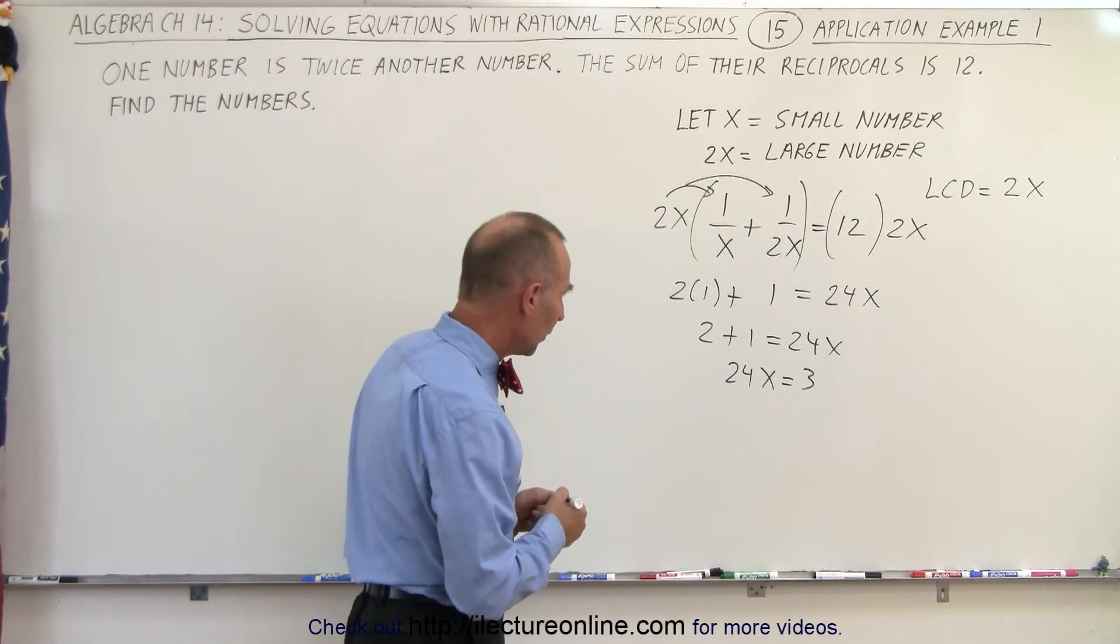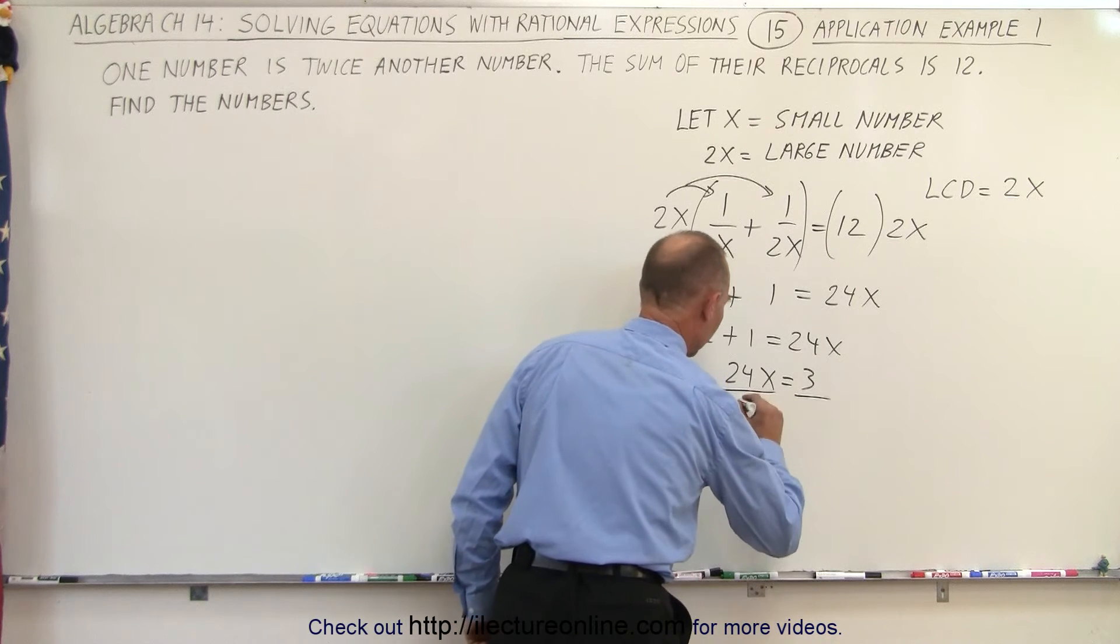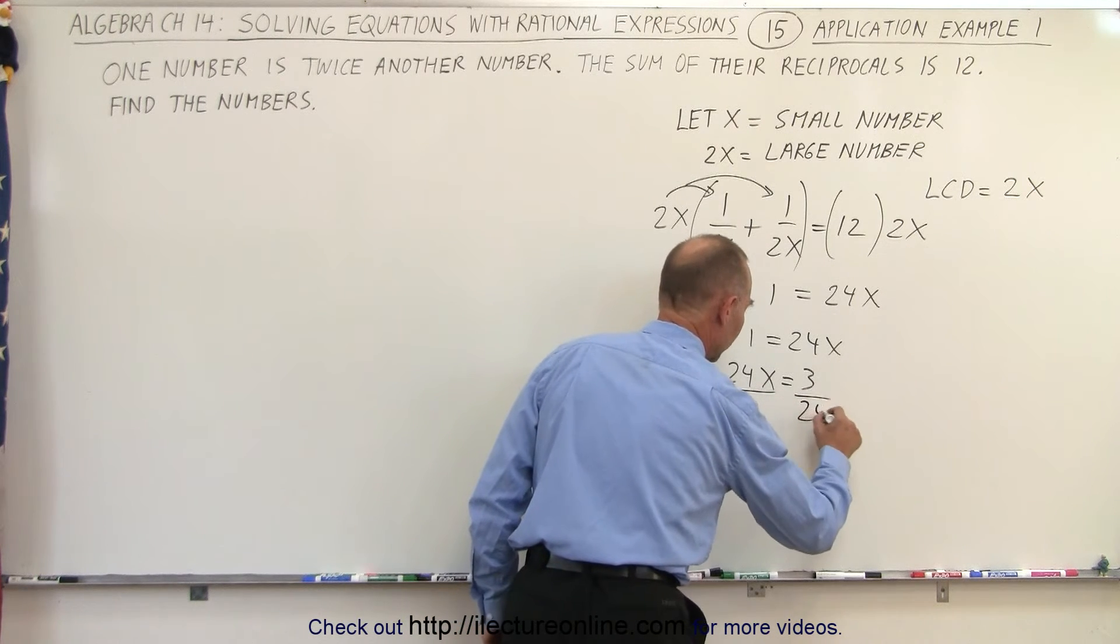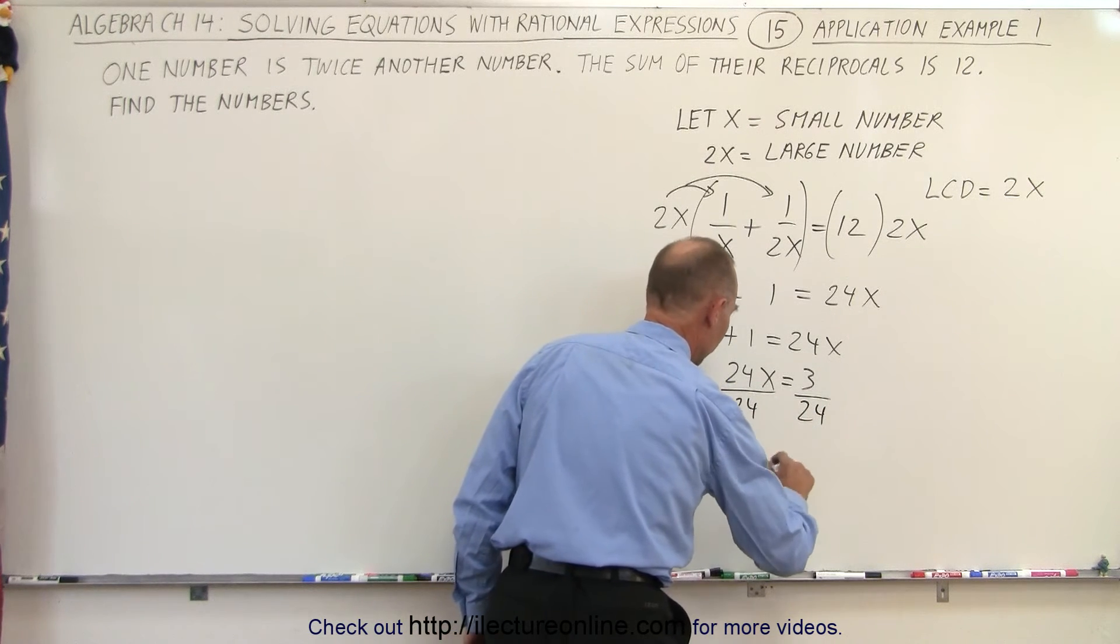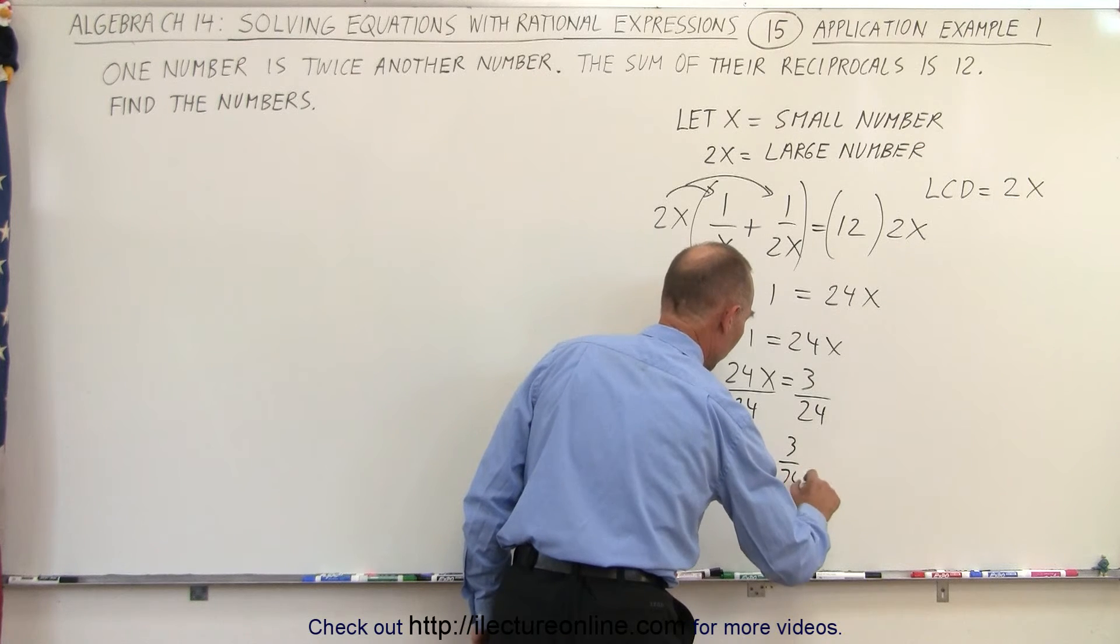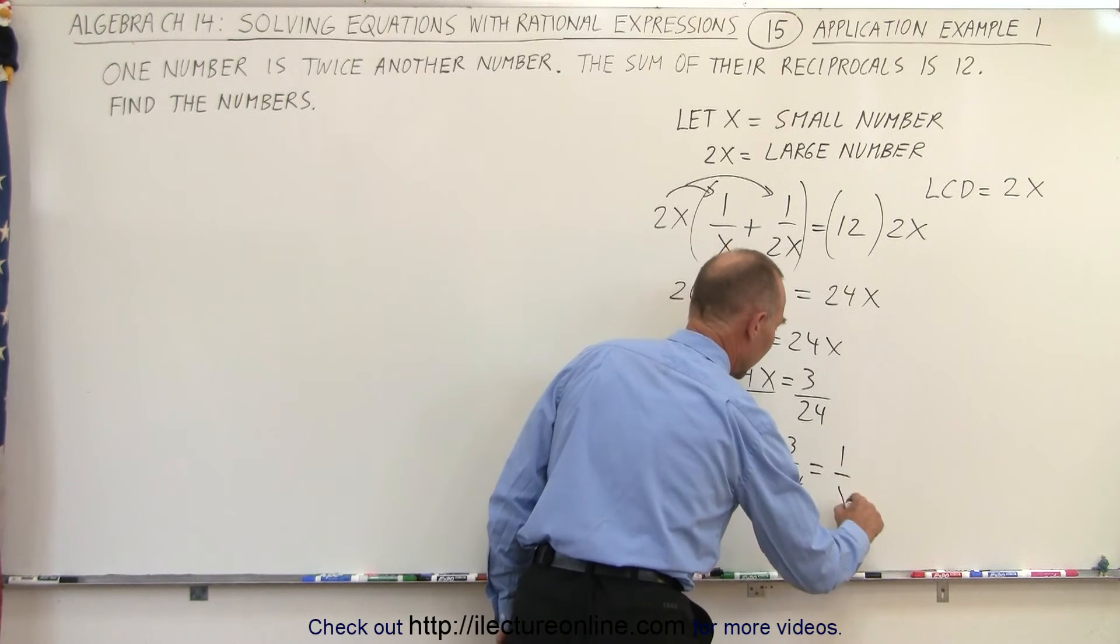At this point, what we're going to do is divide both sides by the coefficient, the numerical coefficient from the x. So we get x is equal to 3 over 24, which can be reduced to 1 over 8.